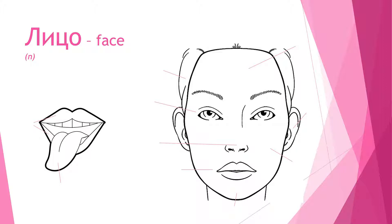Face is лицо, and that is neutral. The first thing we're gonna learn is волосы. That is hair — that is a person's hair — and it is a plural noun, which makes sense.